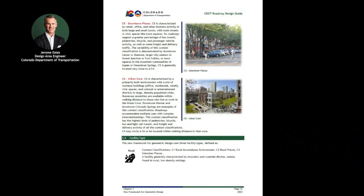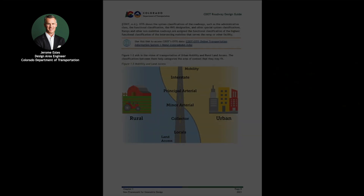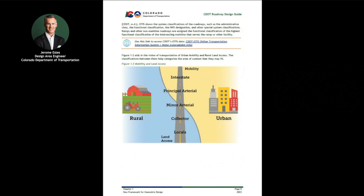After defining the context, the practitioner can move into determining the facility type of the project. The facility types introduced in Chapter 1 begin to define the framework for roads, streets, freeways, expressways, and interstates. Within this chapter, there are elements which will aid in determining the correct facility type for the project.